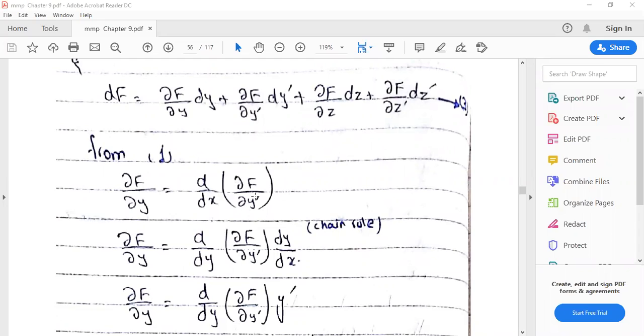f is not differentiated with respect to x because f is independent of x. So chain rule is d by dy partial f over partial y prime dy by dx.